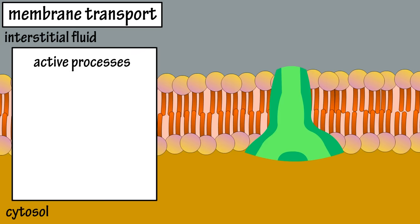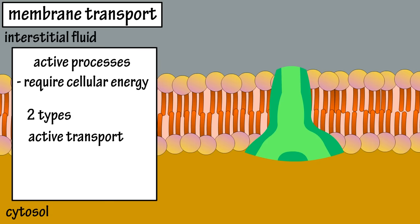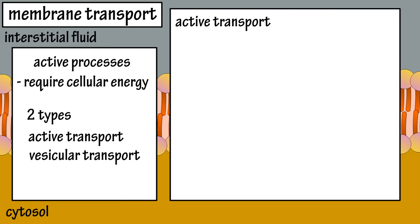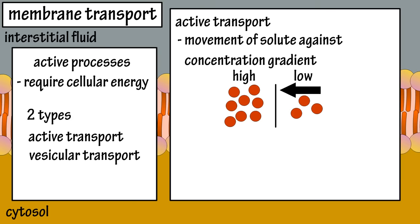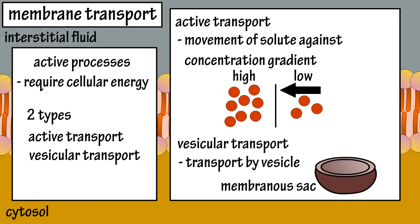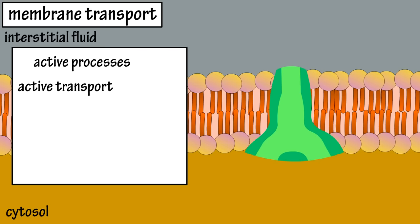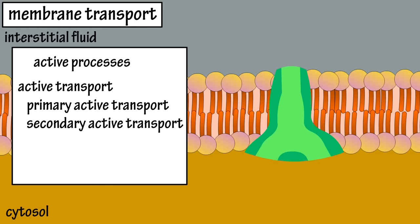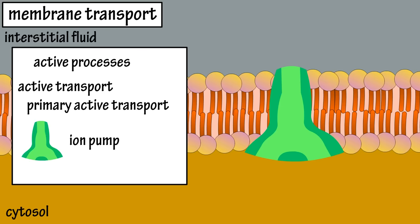Now let's look at active processes. Active processes require the use of cellular energy for membrane transport. There are two types of active processes: active transport and vesicular transport. Active transport is the movement of a solute against its concentration gradient, going from an area of low concentration to a place of higher concentration. Vesicular transport is the transport of large substances across the plasma membrane by a vesicle, which is a membrane-bound sac filled with materials. Active transport has two types: primary active transport and secondary active transport. In primary active transport, cellular protein pumps called ion pumps move ions across the membrane against their concentration gradient.